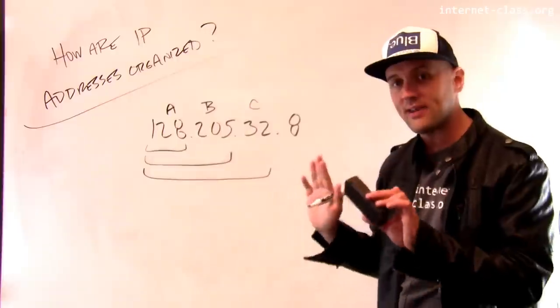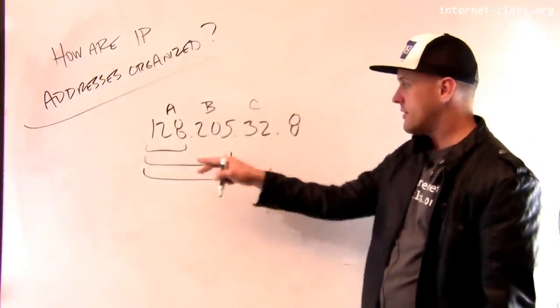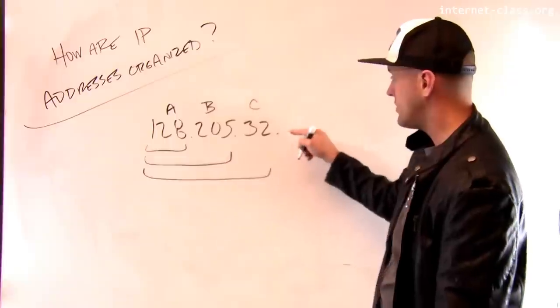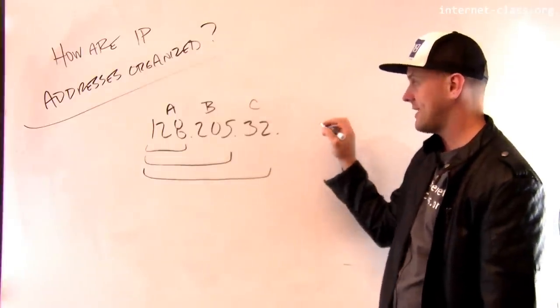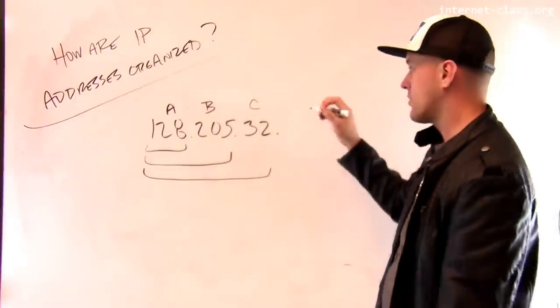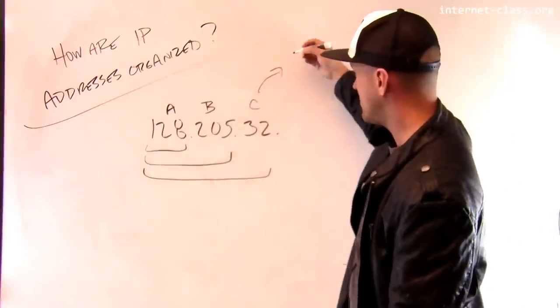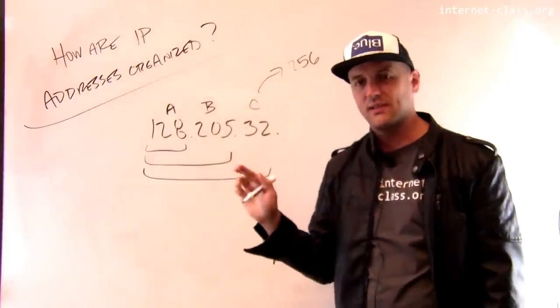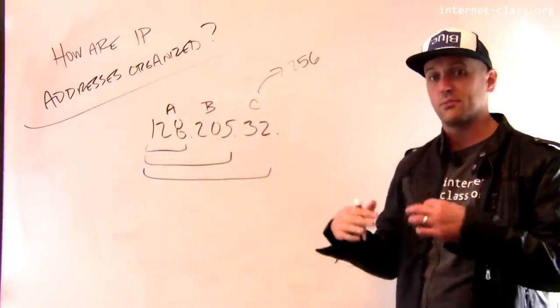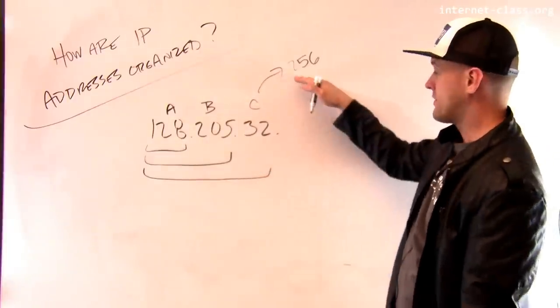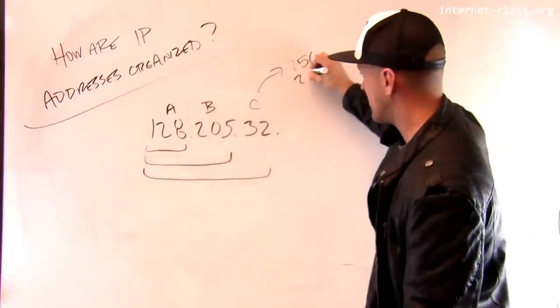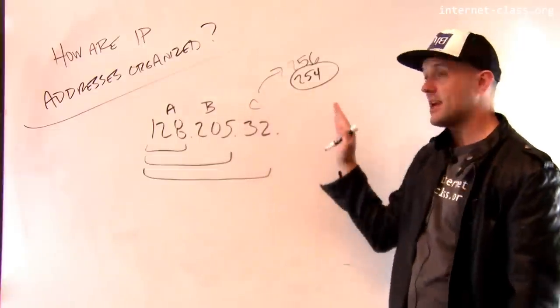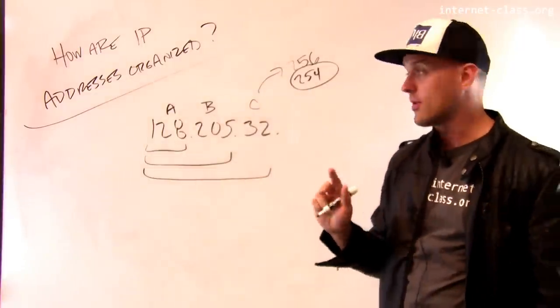And you can see that the size of these networks varies. So if I have 128.205.32, I only have 256 values that I can stick in at the end here. So a class C network has up to 256 addresses associated with it. And it actually turns out a couple of those are special. They're used for broadcast or other reasons. And so this actually turns out to be, I think there's 254 valid host names or valid IP addresses that you can register on a class C network.